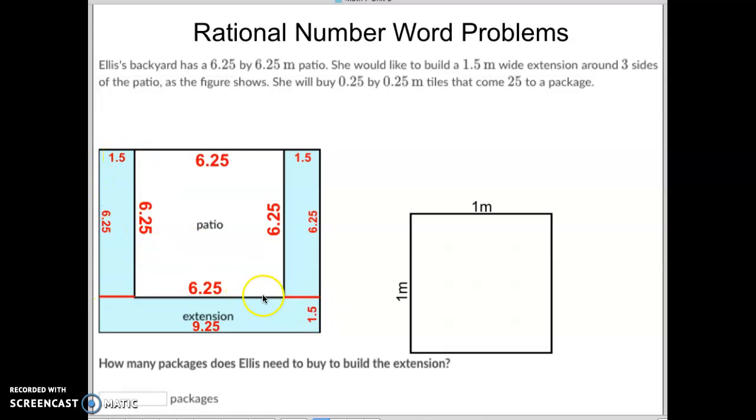But this one is not 6.25 because it's kind of all the way out to here. And if we have 1.5 going extension here and a 1.5 going this way, that's a total of three more meters going out that way. So 6.25 plus three more meters would be 9.25, so the length of this one is 9.25 times 1.5.